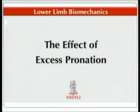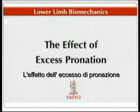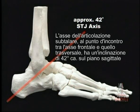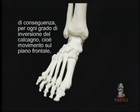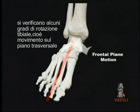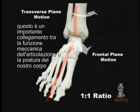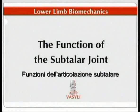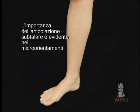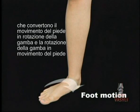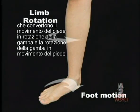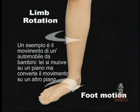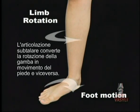The effect of excess pronation. The subtalar joint axis lies approximately halfway between the frontal and transverse planes, about 42 degrees in the sagittal plane. For each degree of calcaneal eversion — frontal plane motion — we see an equal degree of internal tibial rotation — transverse plane motion. This is the all-important link between lower limb biomechanical function and upper body posture. The subtalar joint converts foot rotation into leg rotation and leg rotation into foot rotation — much like the differential in a car, which rotates on one plane but converts motion into another plane at a 90 degree angle. The subtalar joint can be thought of as a torque converter.